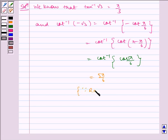Because the range of the principal value branch of cot inverse is 0 to pi.